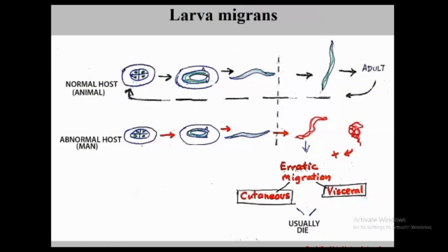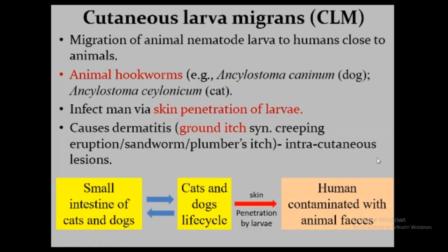Normally, animals are the definitive host and the larva develops into an adult in the animal, with the cycle continuing in the animal. But when they enter an abnormal host like the human, the larva cannot mature to adult; rather it remains as a larva in the cutaneous or visceral organs. Eventually the larva dies and produces the human lesions of the disease. Let us first consider cutaneous larva migrans, then visceral larva migrans.